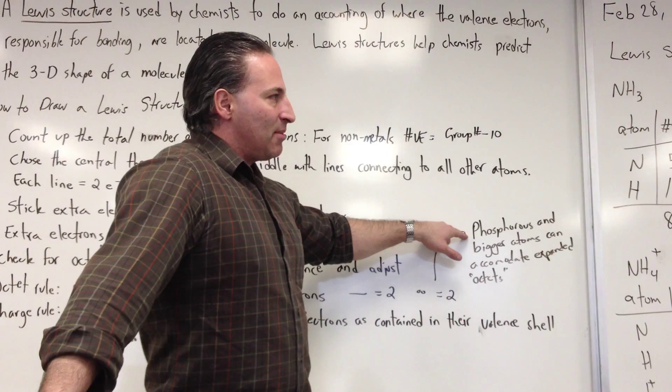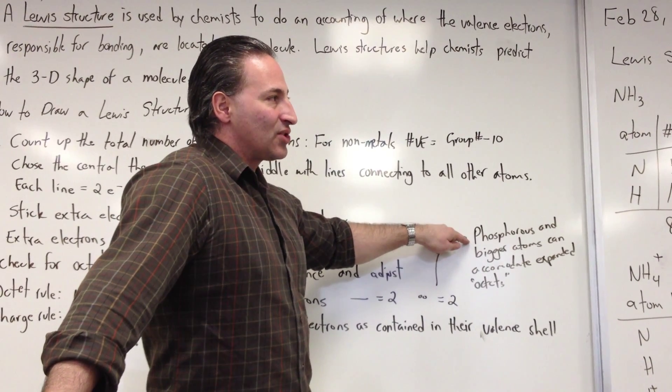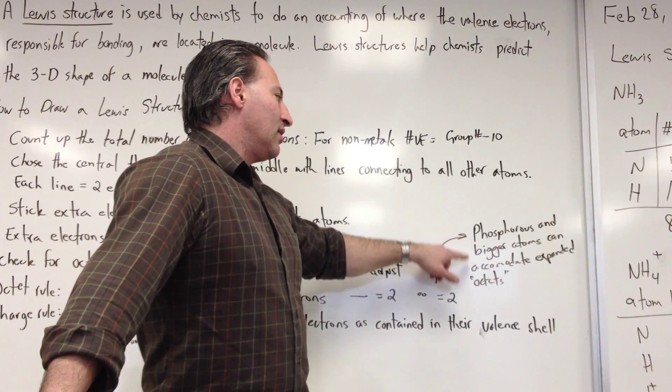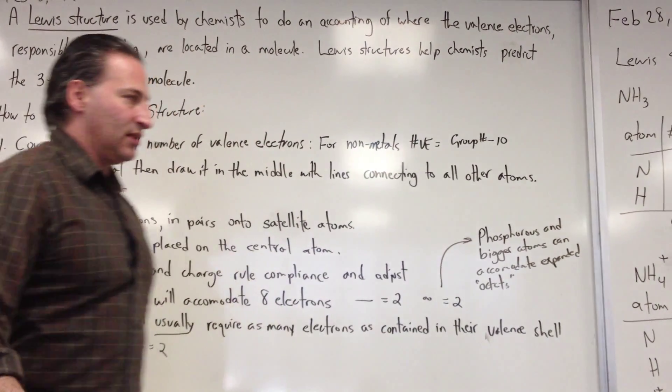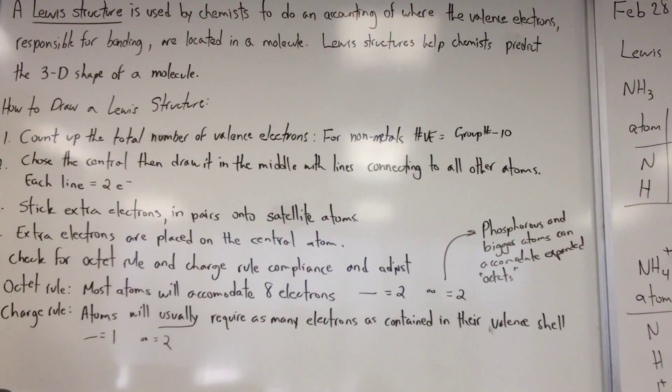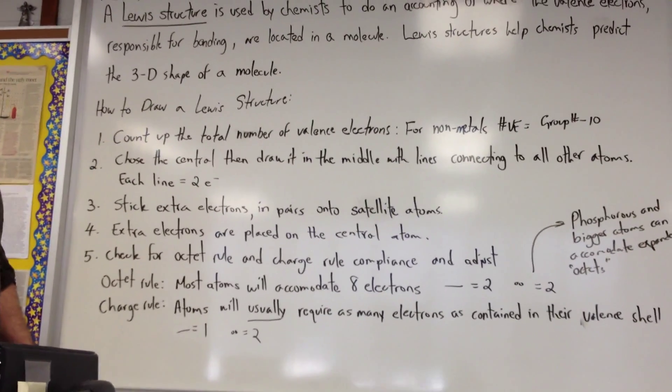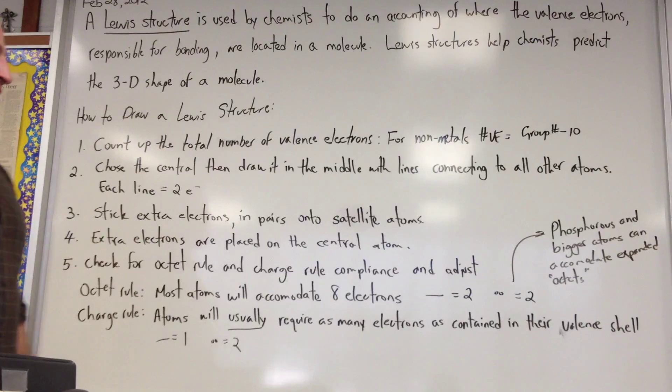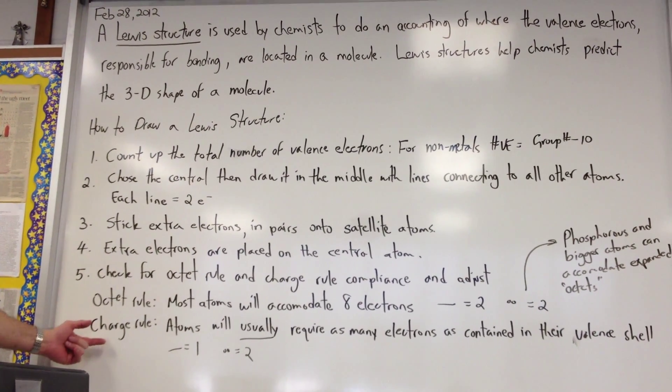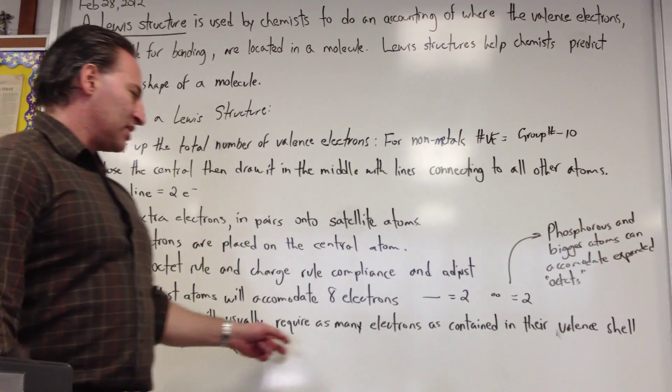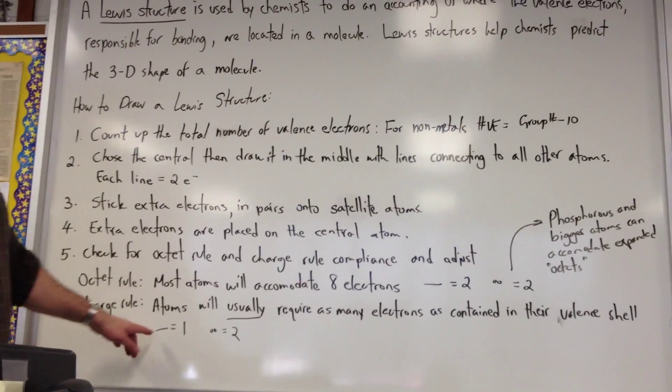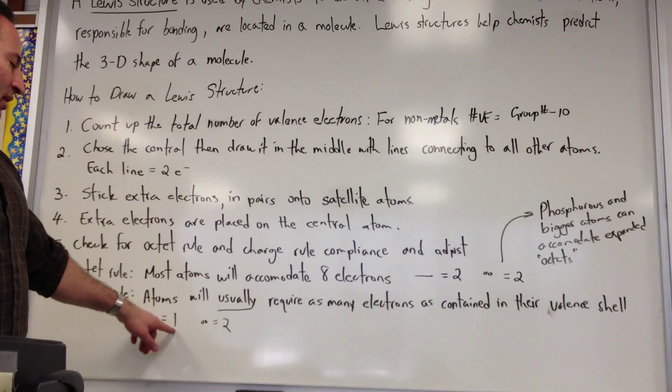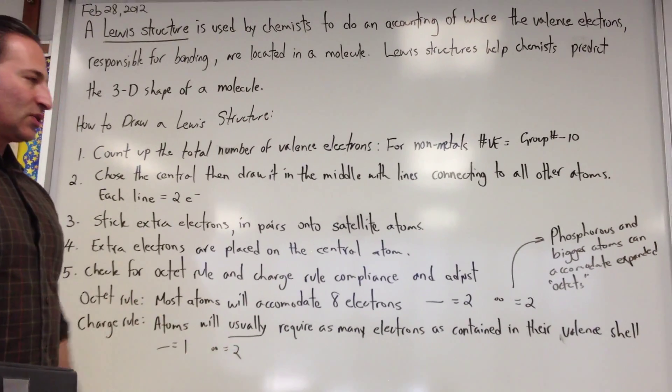Of course, if your atom has 15 protons or more, like phosphorus, then it can sometimes accommodate expanded octets, meaning more than 8 electrons in its vicinity. And for atoms like boron and beryllium, you'll have diminished octets. The charge rule says that atoms will usually require as many electrons as contained in their valence shell. When you have a bond going to an atom, it counts for 1 electron and a lone pair counts for 2.